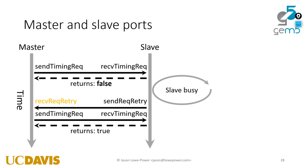In TLM, like SystemC TLM, it's actually a three-step handshake - they have one other step. In TLM it's like a begin request and then end request, with initiator and target. The initiator sends a begin request, and then there's an end request. So within this request there's another layer of flow control inside send timing request.